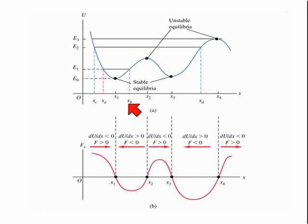If instead the total energy is E2, the particle can move from xC to xD.